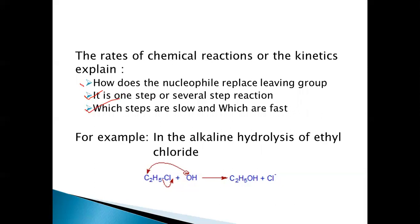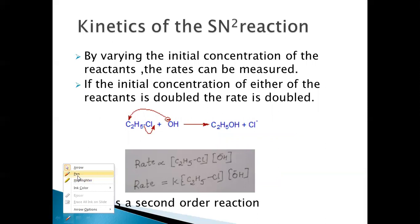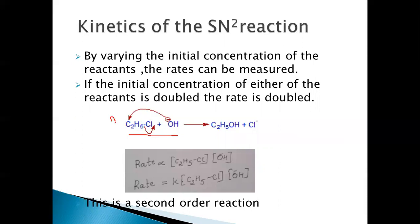We can also determine whether the nucleophile attacks from the front side or the back side. Taking the alkaline hydrolysis of ethyl chloride, if the initial concentrations of the reactants are varied, the rate also varies. If both the reactant and reagent concentrations are doubled, the rate of reaction is also doubled. So the rate is directly proportional to the concentration of both reactants — ethyl chloride and OH minus.